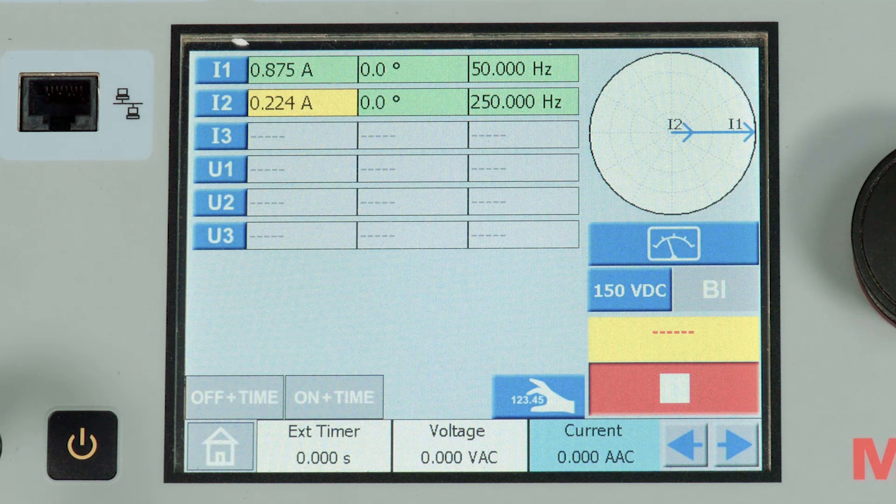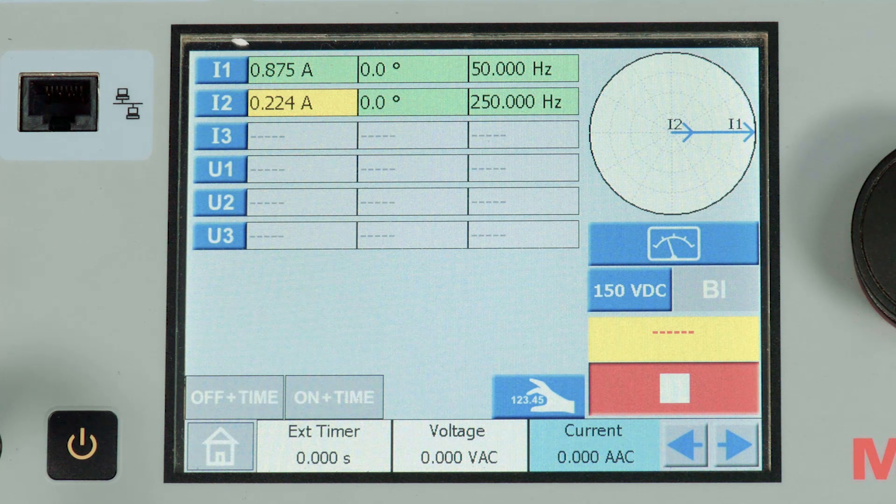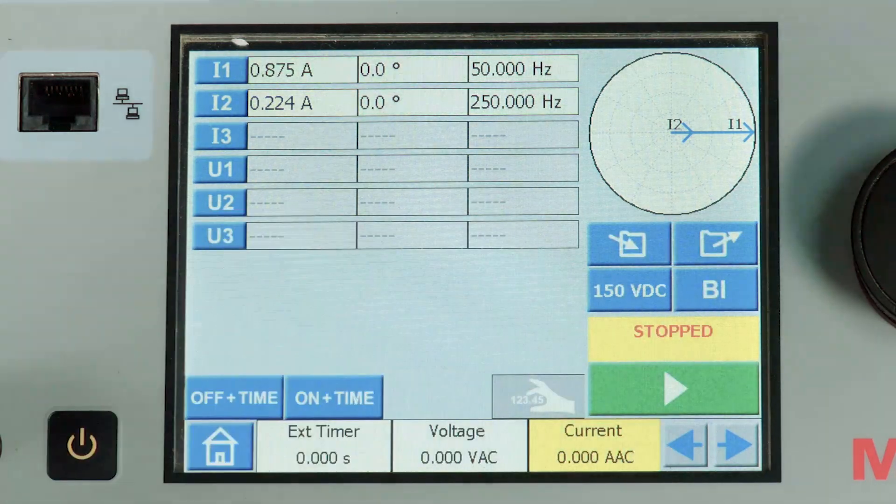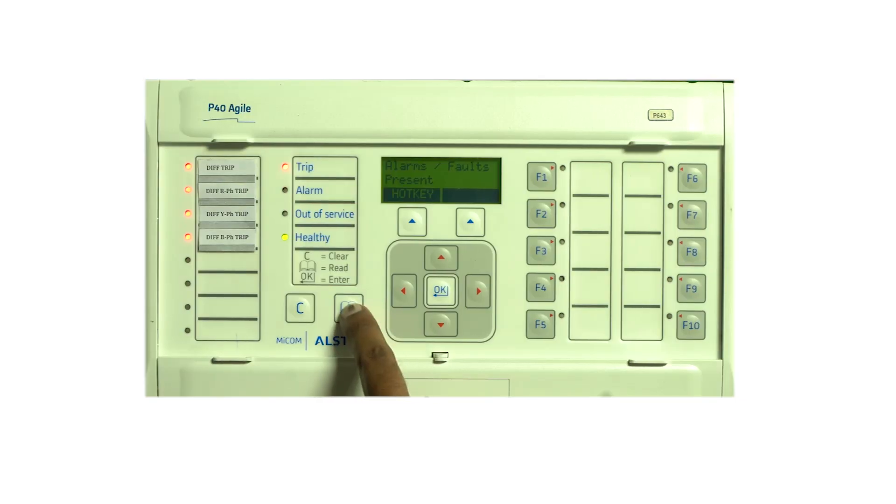This test confirms that the relay is operating when the fifth harmonic content is less than 25 percent and blocking when the fifth harmonic content is more than 25 percent. Let me switch off the kit. Reset the relay.